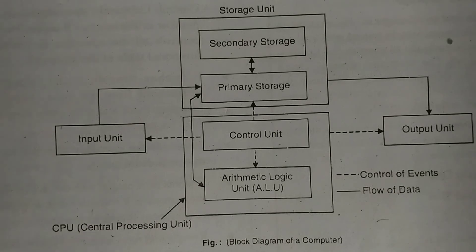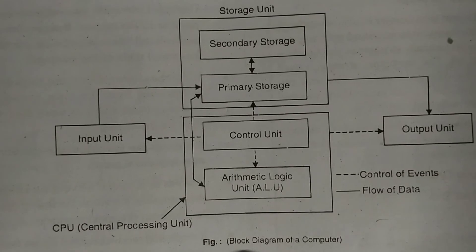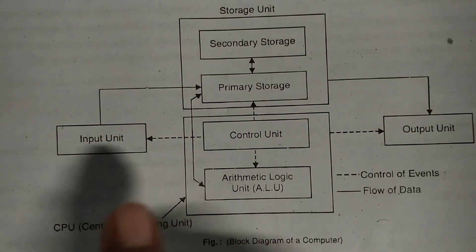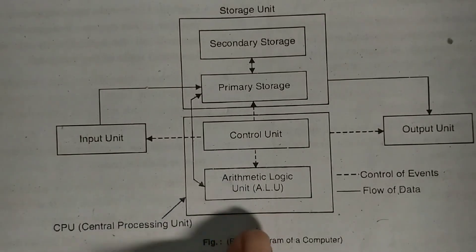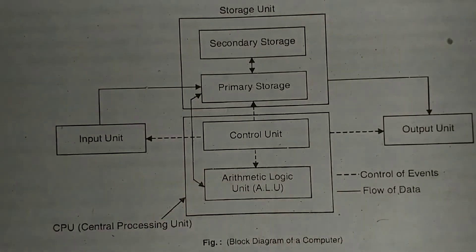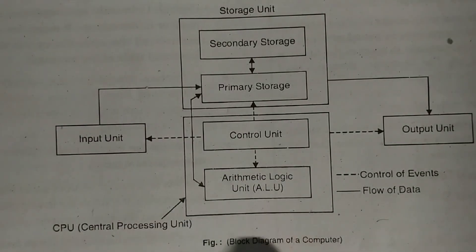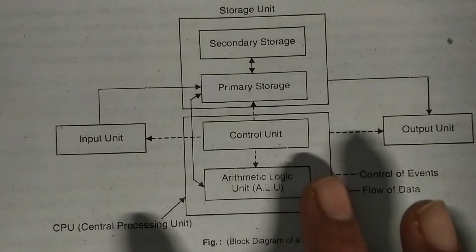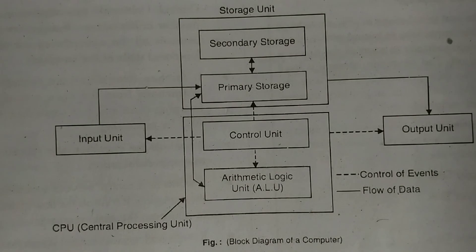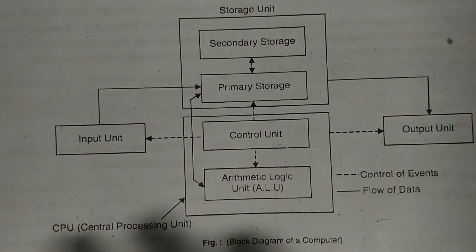For Telugu medium students: this is the block diagram — the input unit receives instructions. Input devices convert data into 0s and 1s. The central processing unit contains the control unit and the arithmetic logical unit. In the arithmetic logical unit, the arithmetic unit handles additions and subtractions, and the logical unit handles code and execution. The control unit manages all input and output operations and ensures data reaches at the correct time.